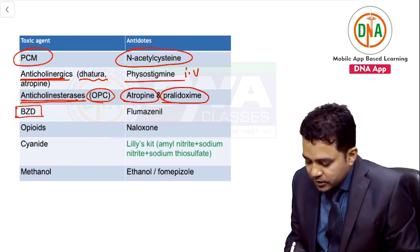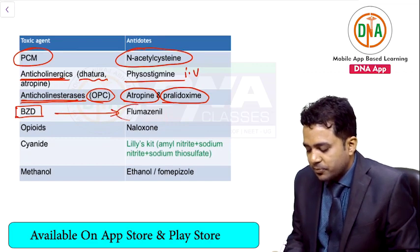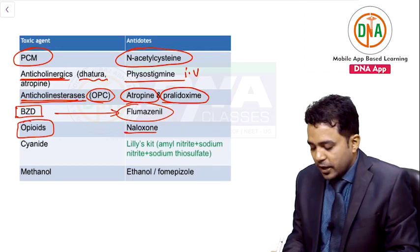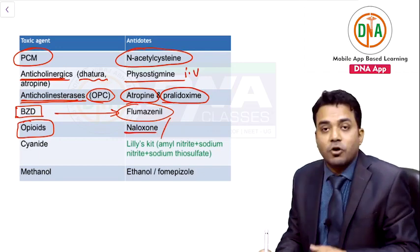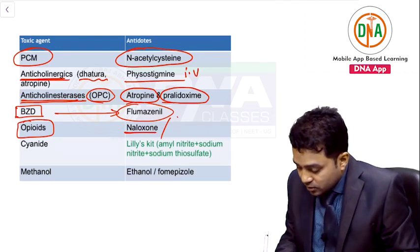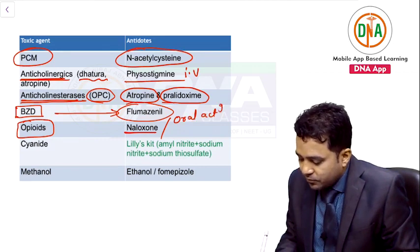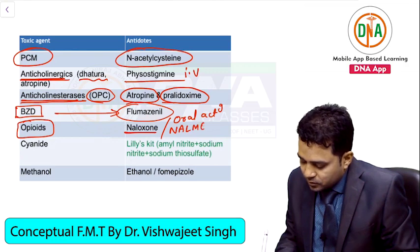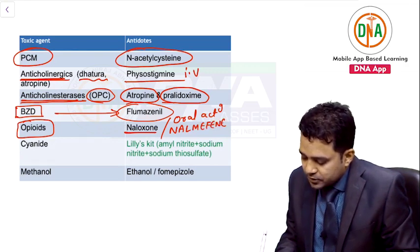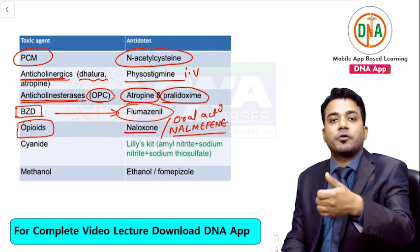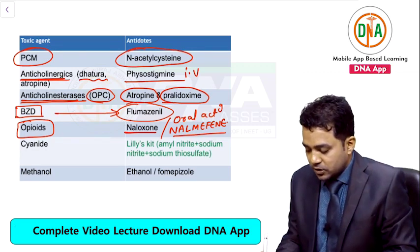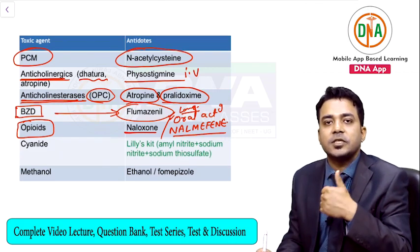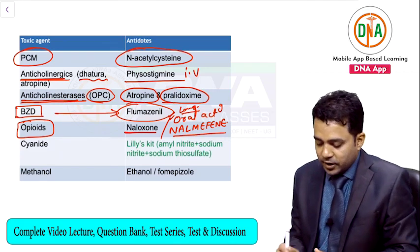For benzodiazepine poisoning, the antidote is flumazenil — the benzodiazepine antagonist. For opioid poisoning, we use naloxone. If naloxone is not in the options, go for the oral long-acting drug nalmefene — this was the correct answer in one All India question where naloxone was not given as an option.